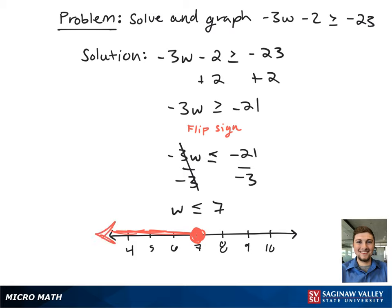In interval notation, this looks like an open-ended bracket from negative infinity to 7 with a closed bracket.